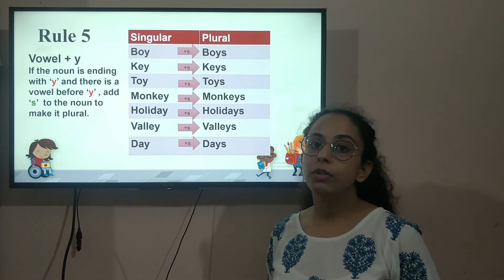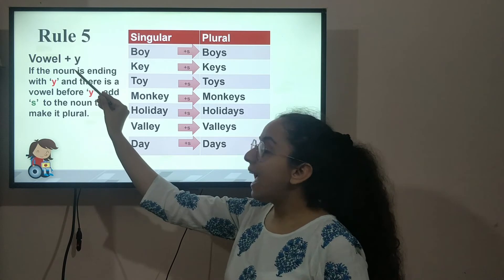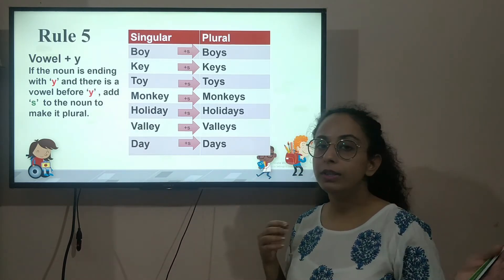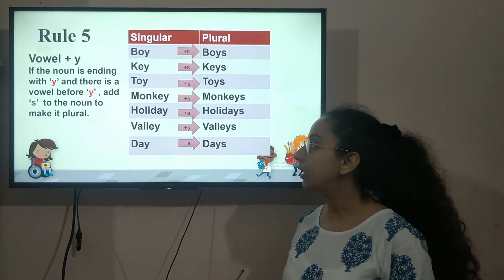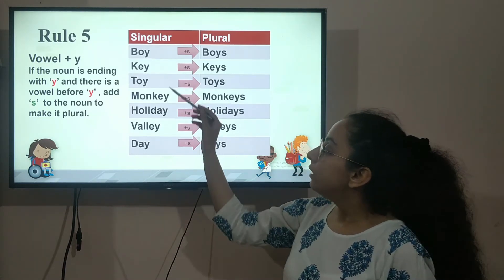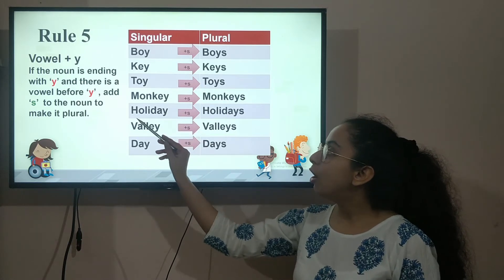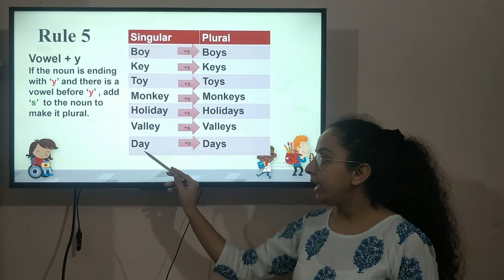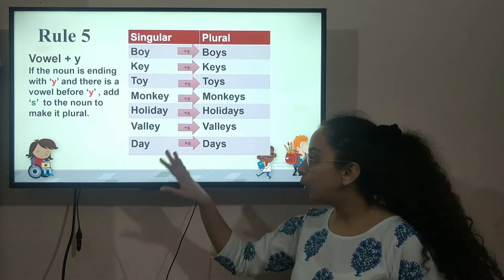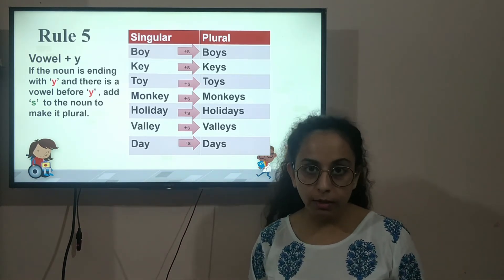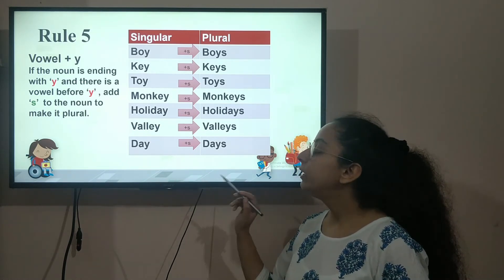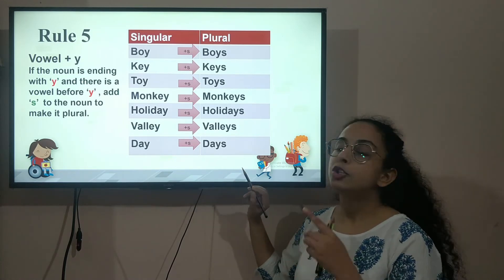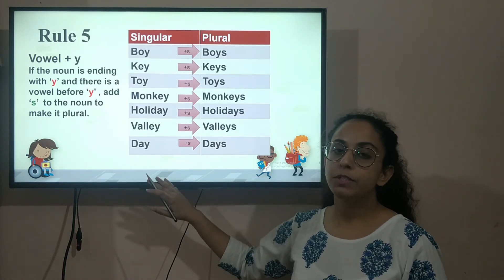But if the noun ends with a vowel and Y — vowel being A, E, I, O, or U — we simply add S. For example: monkey, holiday, valley, day — all these words end with a vowel and Y, so we do not remove the Y and simply add S to make them plural from singular.